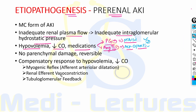Pre-renal AKI has no parenchymal damage and is rapidly reversible once blood flow is restored. However, prolonged periods of pre-renal azotemia may lead to ischemic injury termed acute tubular necrosis. Long-term pre-renal azotemia can therefore lead to ischemic acute tubular necrosis.